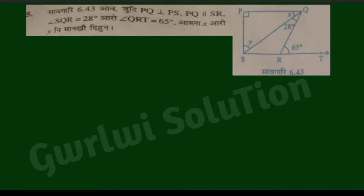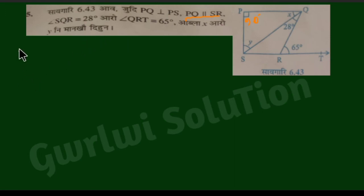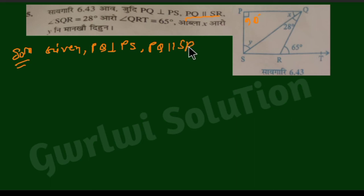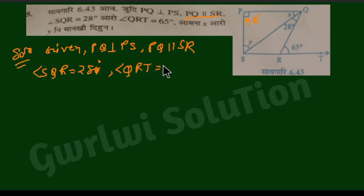The next question is 6.43. PQ is perpendicular to PS, meaning angle P equals 90 degrees. PQ is parallel to SR. Angle SQR is 28 degrees and angle QRT is 65 degrees. We need to find x and y.